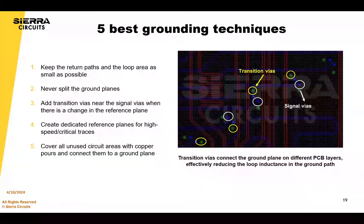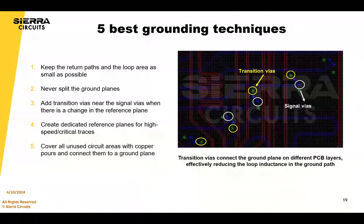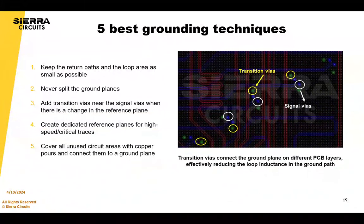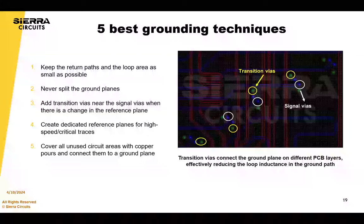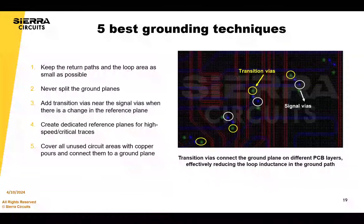For grounding techniques: keep return paths and loop areas as small as possible. Never split ground planes. When there's a change in the reference plane, include transition vias near the signal vias. Create dedicated reference planes for high-speed critical signals. Cover all unused circuit areas with copper pours and connect them to the ground plane.